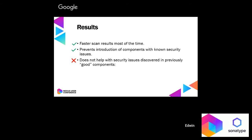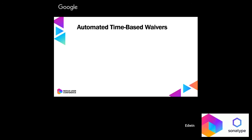It does not help with security issues that are discovered in previously good components, because it's essentially a caching service. Those are particularly problematic for a few reasons — they're unexpected and don't happen as a direct result of a recent change. Teams will come to me and say, hey, we updated this particular version but it's flagging for something else — we didn't change anything in there. And we feel that they tend to be discovered at the worst possible time. That's when we decided to introduce automated time-based waivers.